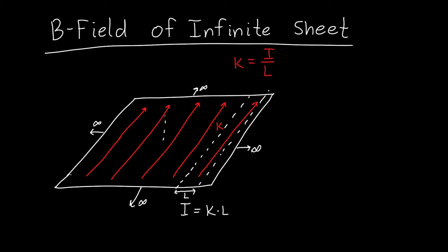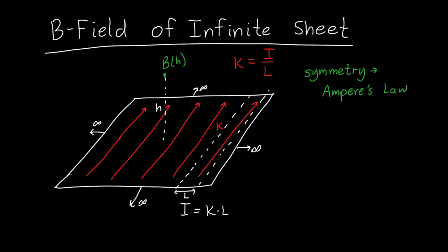We want to know the B field at some height H away from the sheet — the B field as a function of the height away from the infinite plane. Because this problem has a lot of symmetry, we can use Ampere's law to figure out what the B field is. Ampere's law says that the integral of B·dr around some closed loop is equal to μ₀ times the current penetrating through that loop.